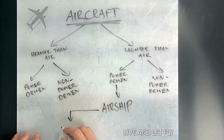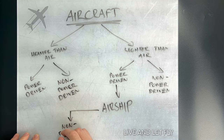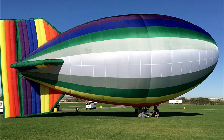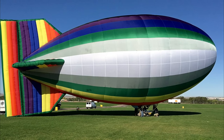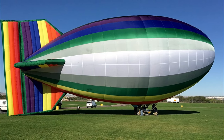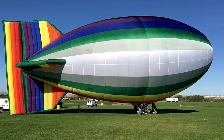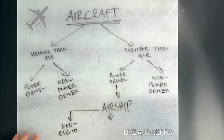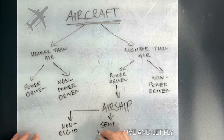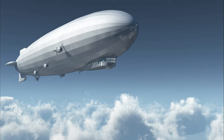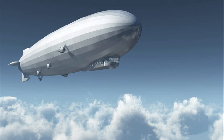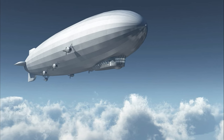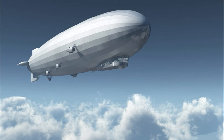Non-rigid airships, often called blimps, have a flexible envelope that maintains its shape thanks to internal pressure. These iconic airships are used for advertising, aerial tours, and broadcasting, offering a distinctive and memorable presence in the skies. Semi-rigid airships strike a balance between flexibility and structure, featuring a partially rigid framework which helps maintain their shape and control. They're employed in surveillance, advertising, and scientific research tasks.